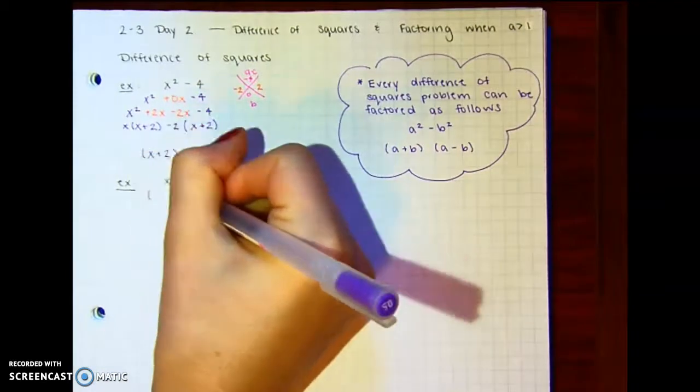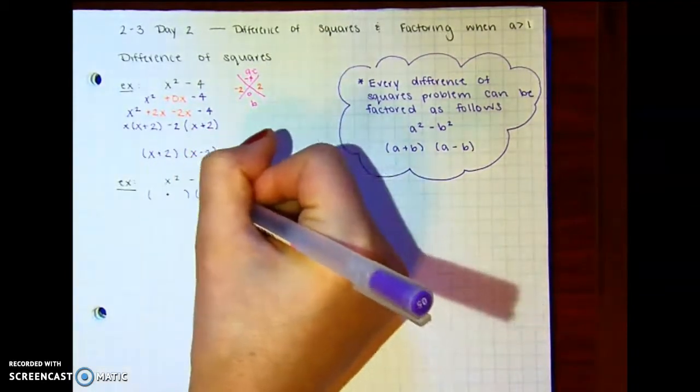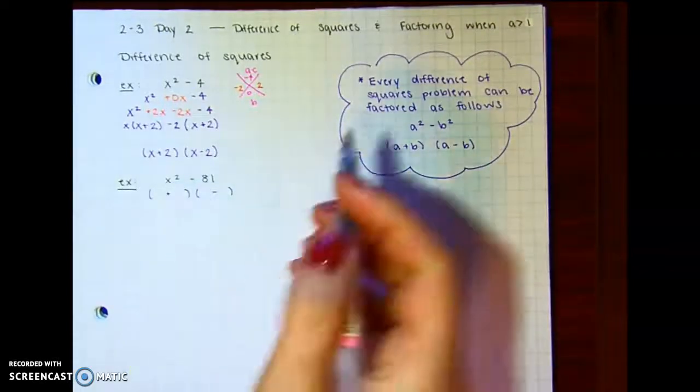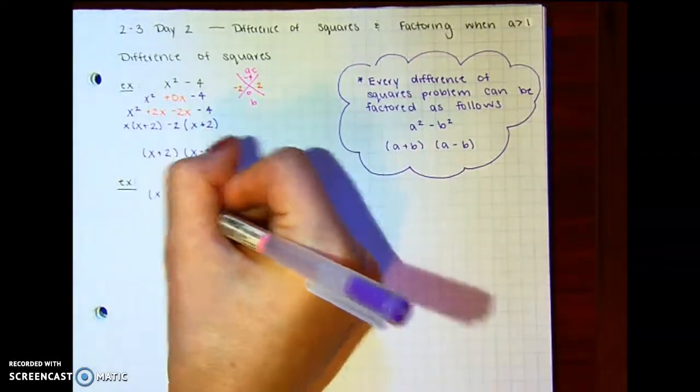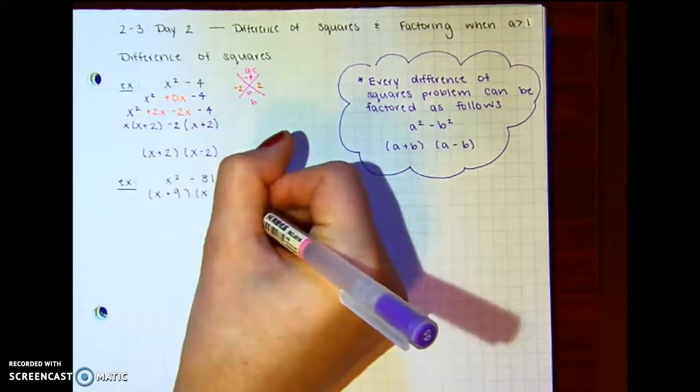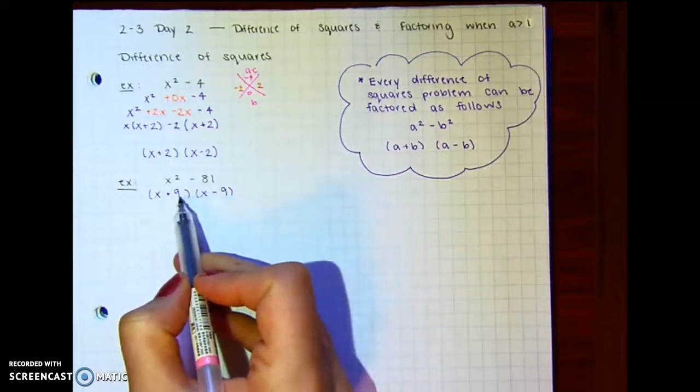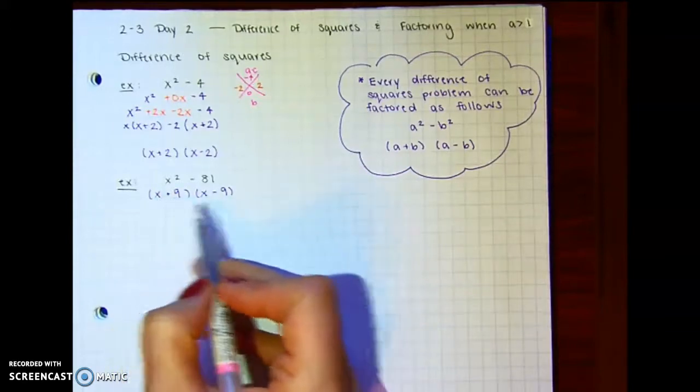This is a difference of squares, so it's going to factor to be one's positive, one's negative, the square root of x is x. So it'll be x here, and the square root of 81 is 9. So it'll be x plus 9 times x minus 9. And you can always check by foiling this out.